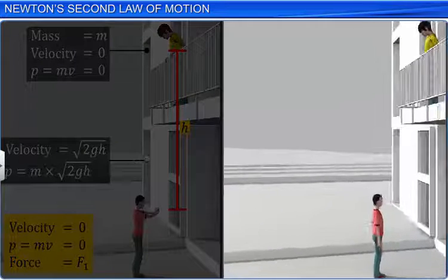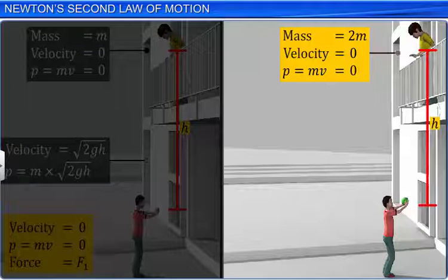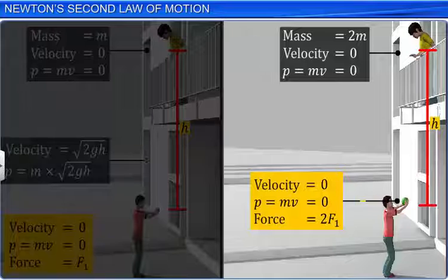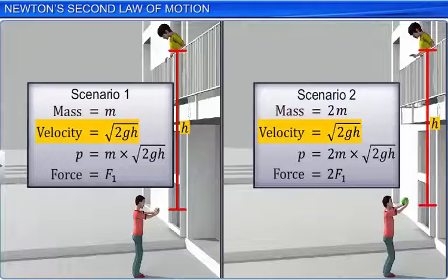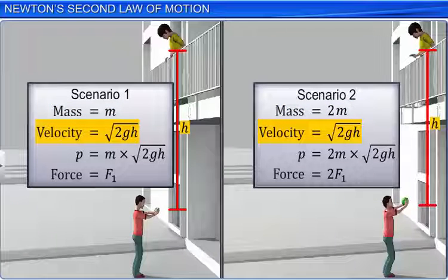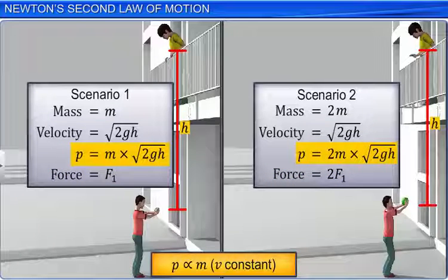Another ball of mass 2M is dropped from the same height. This time, the force required to catch the ball is 2F. Between these two scenarios, the mass of the ball doubles, but the final velocity remains the same. Therefore, the momentum of the ball also doubles. Here, the momentum of the ball increases due to an increase in its mass.